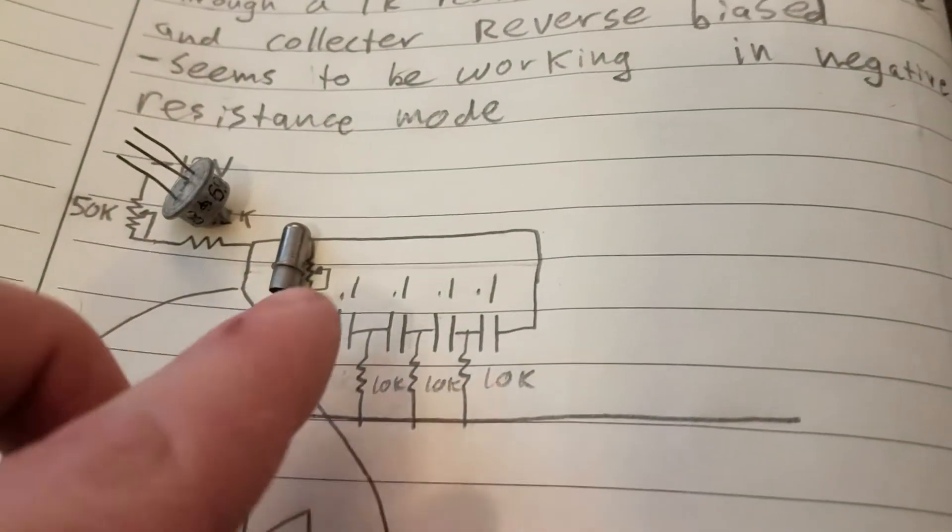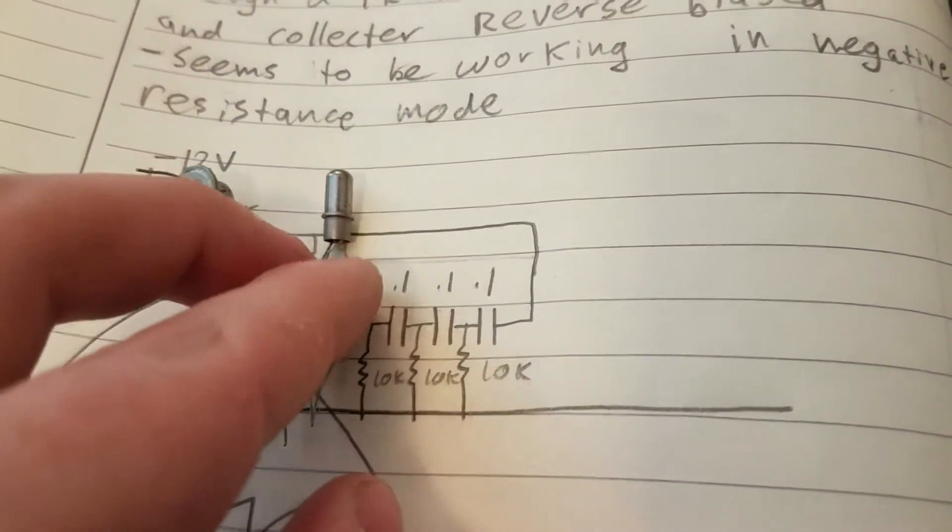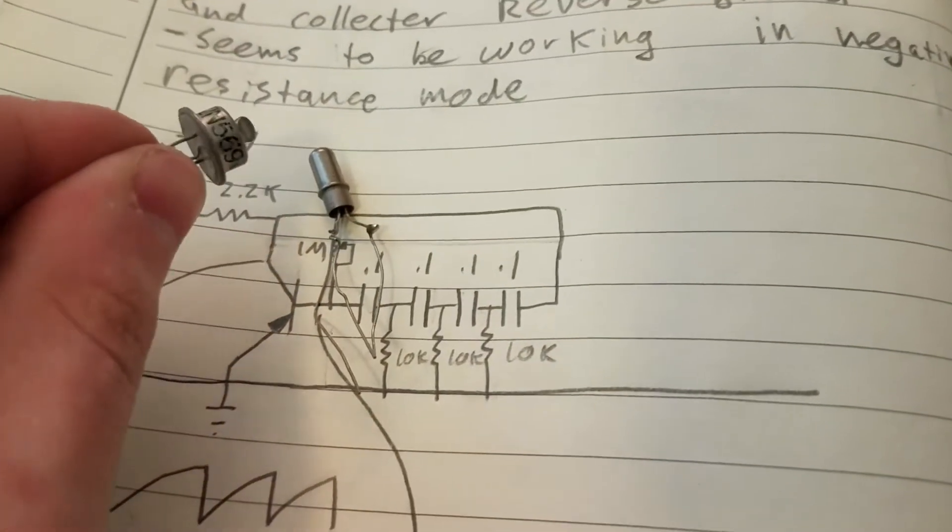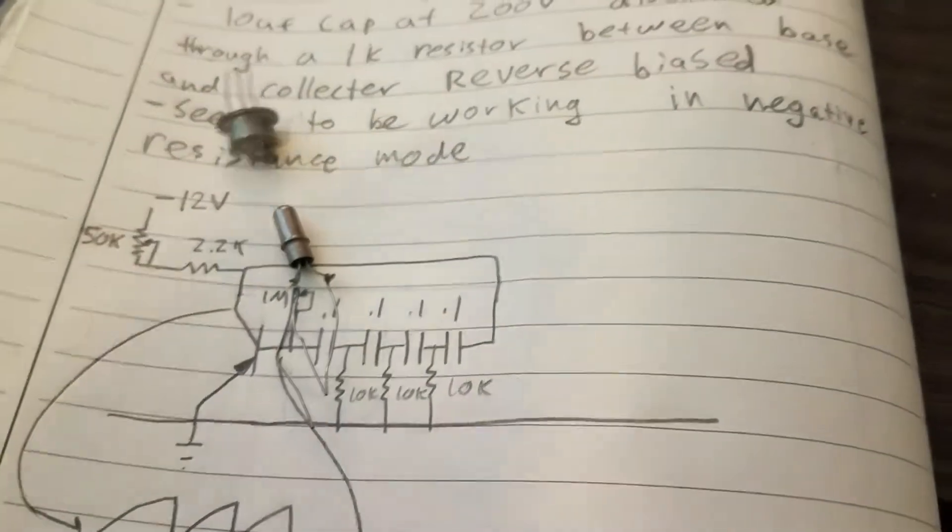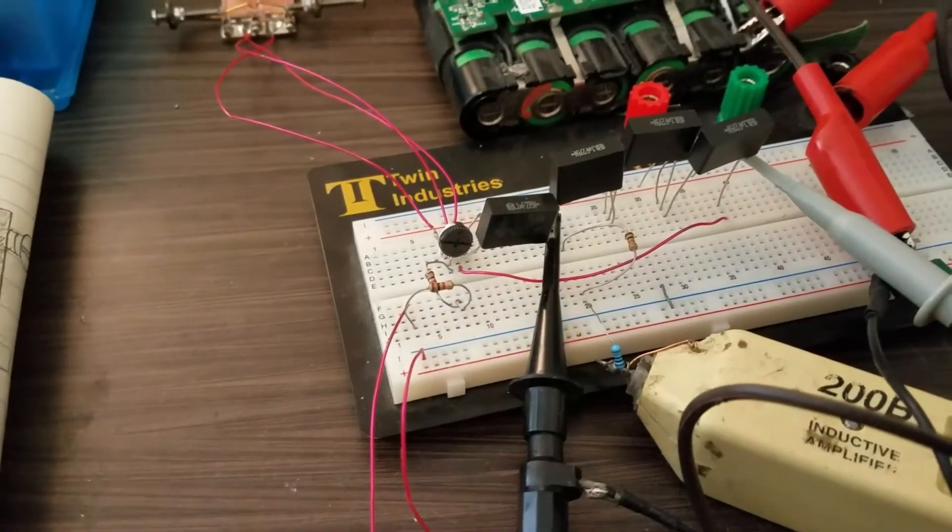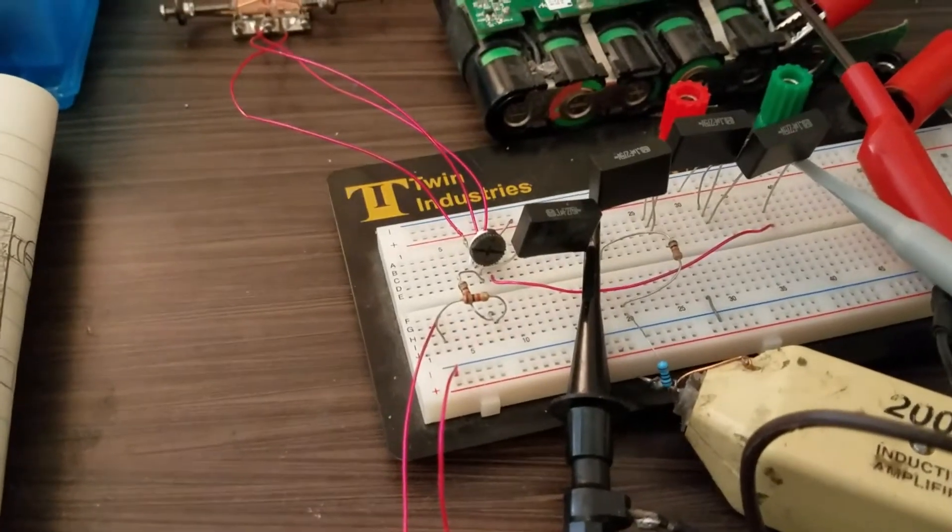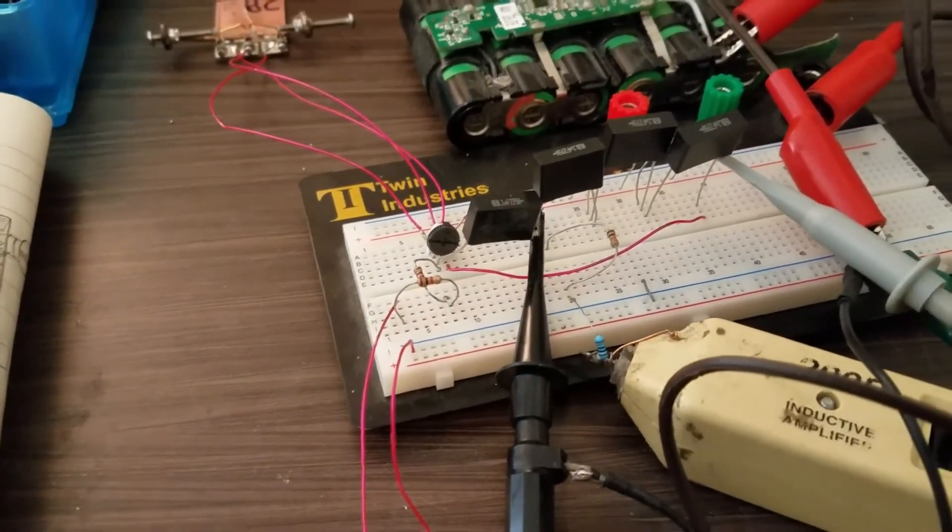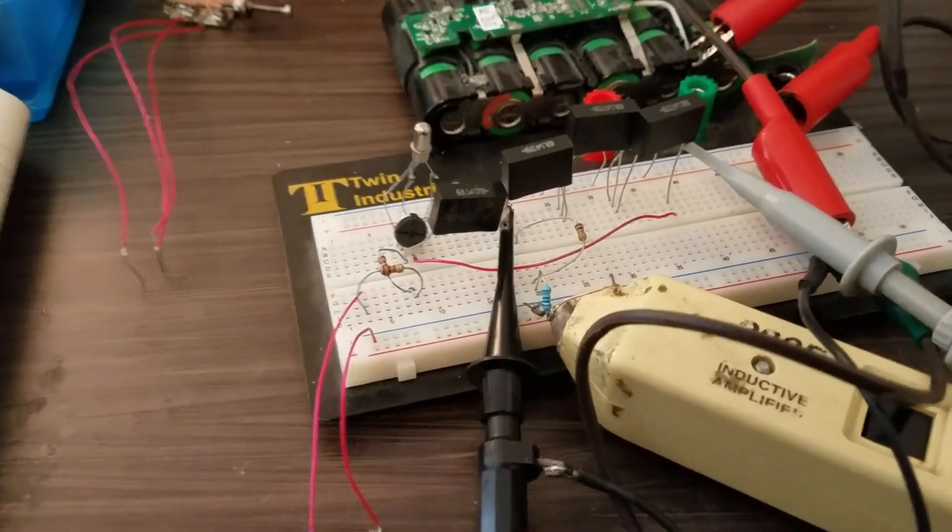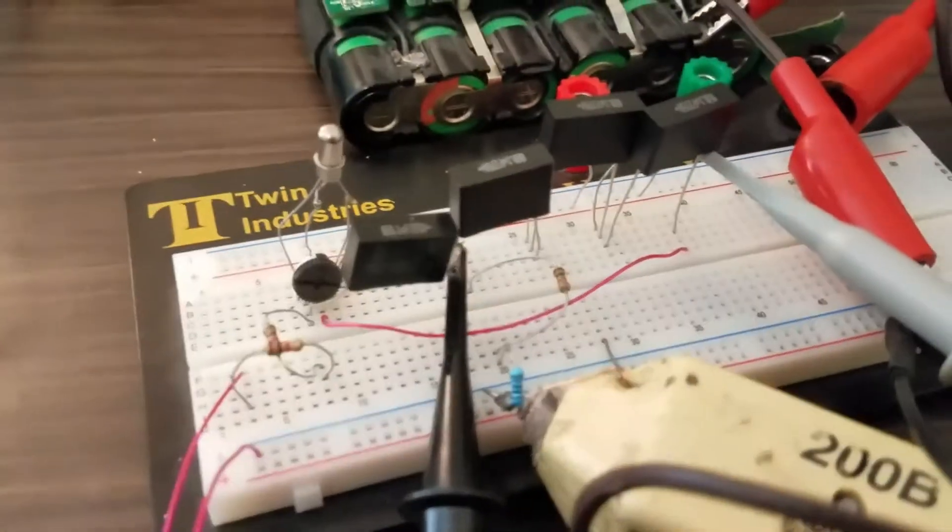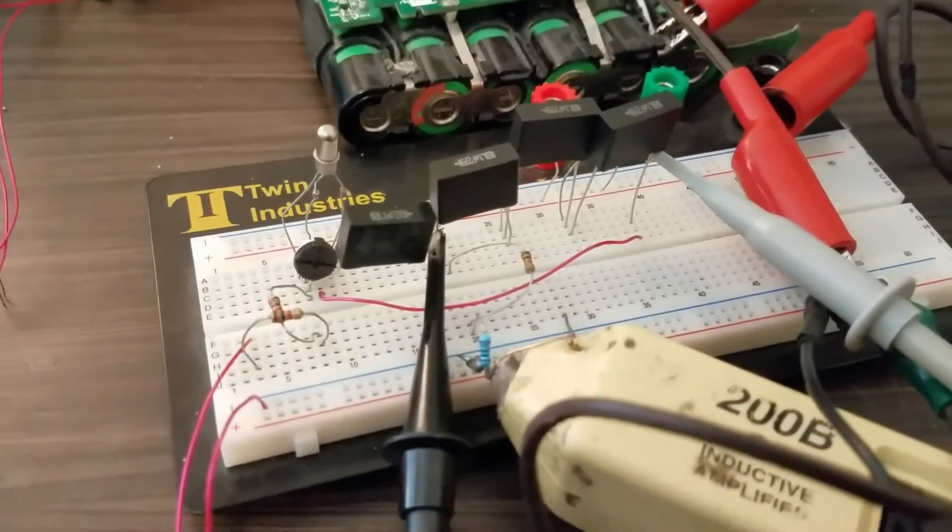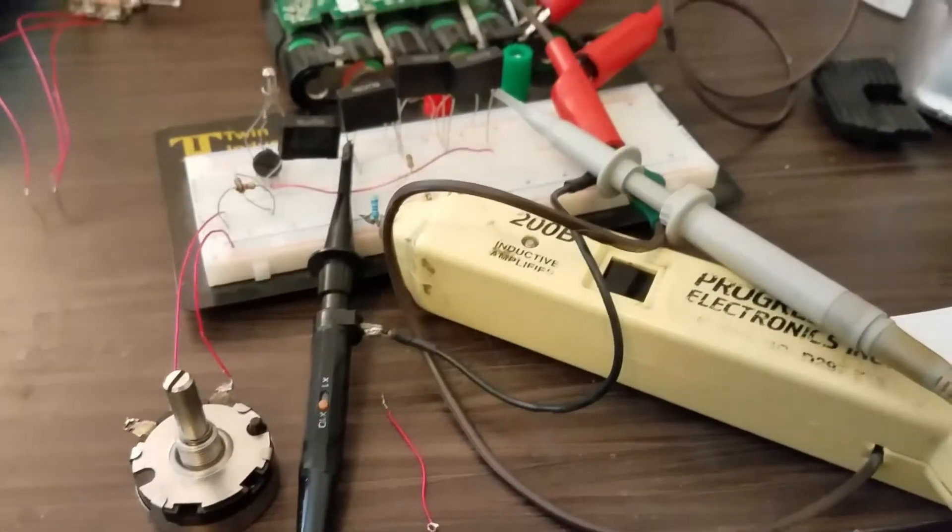And on the tester I measured this one at about HFE of 34 and this one's about 150. So let's put these in the circuit and see if it works as intended with the proper sine wave that we would expect out of a phase shift oscillator. Okay, I have this one in there first. Circa 1959. And let's see if I can get that to work.